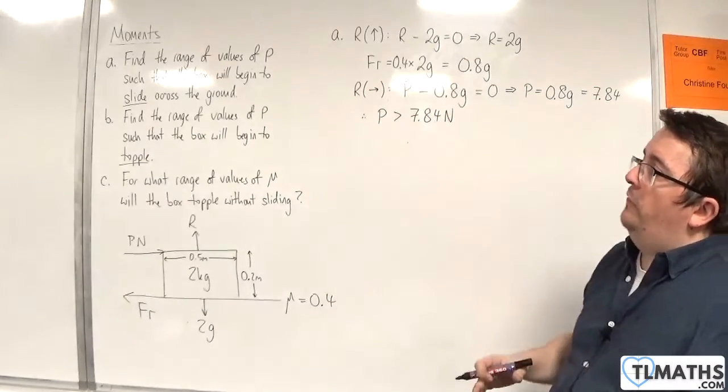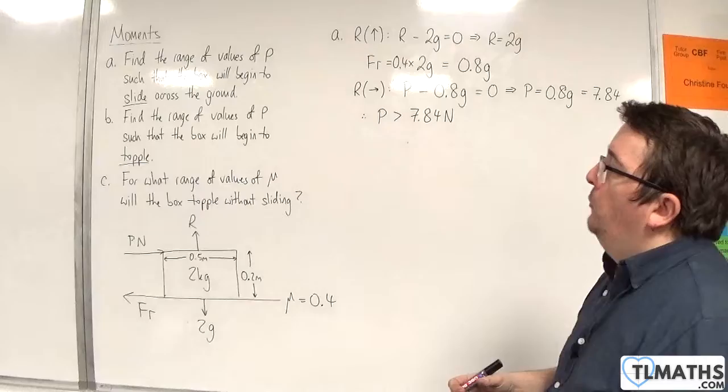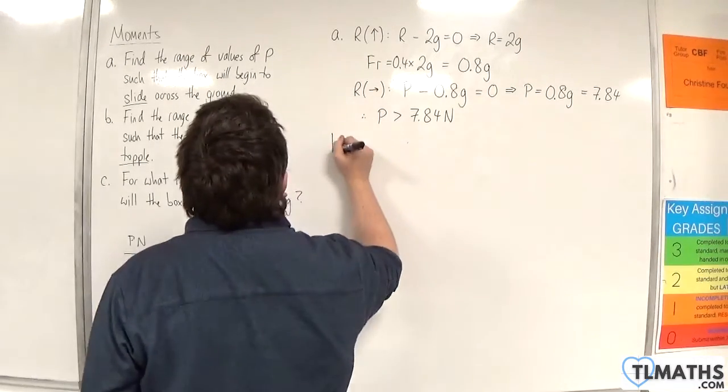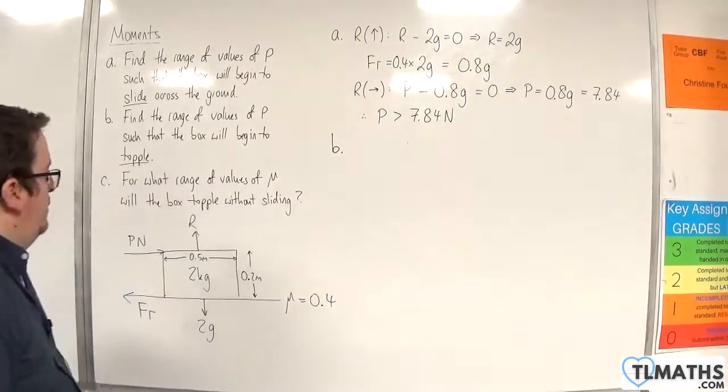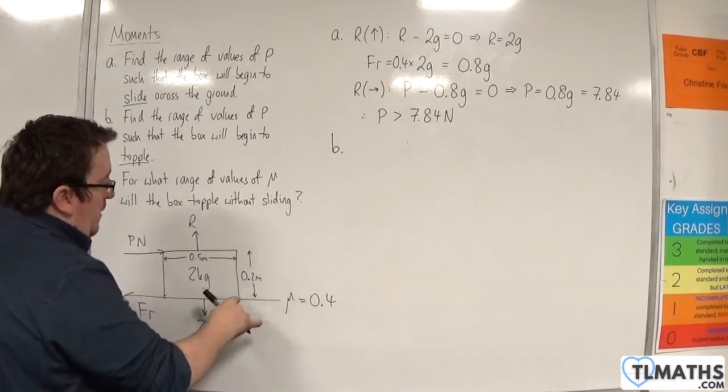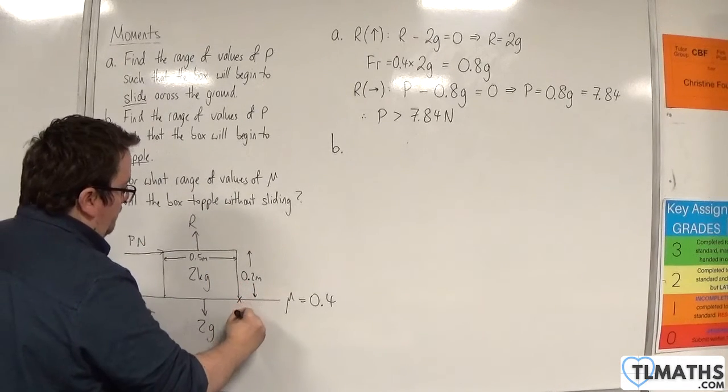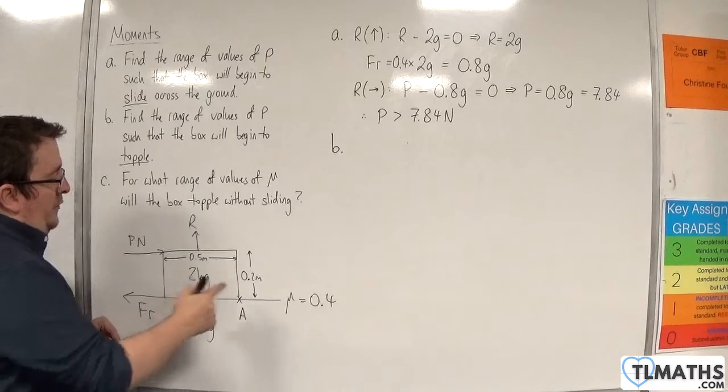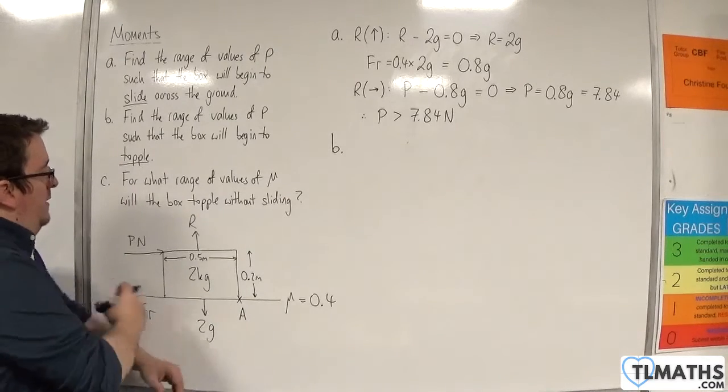Now part b, find the range of values of p such that the box will begin to topple. If it's going to begin to topple, it will start toppling this way, about this corner. Let's call that corner A.